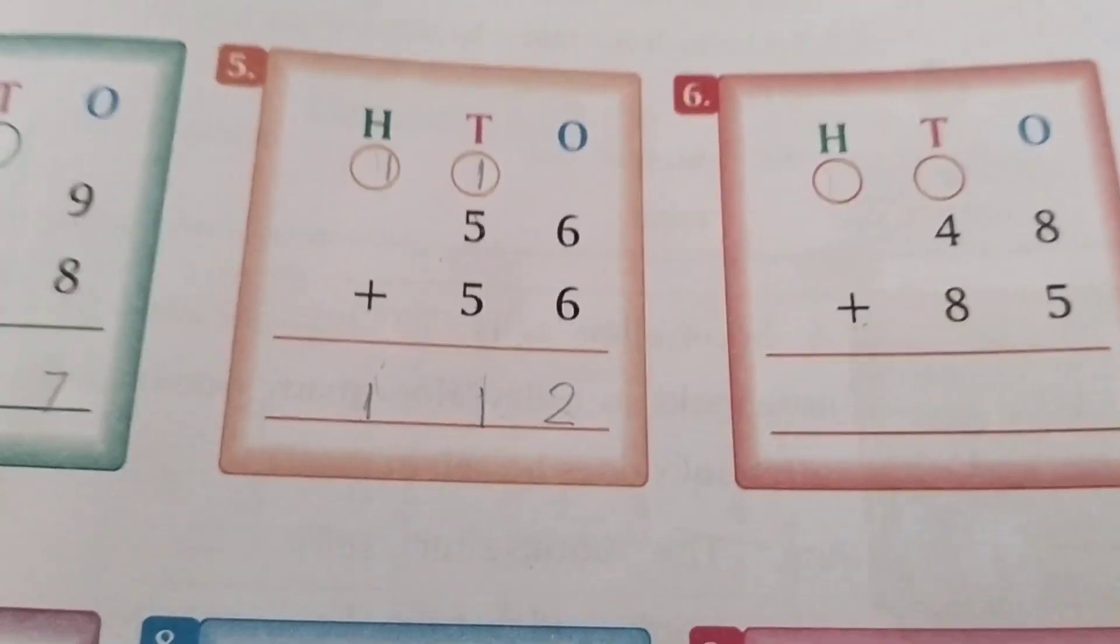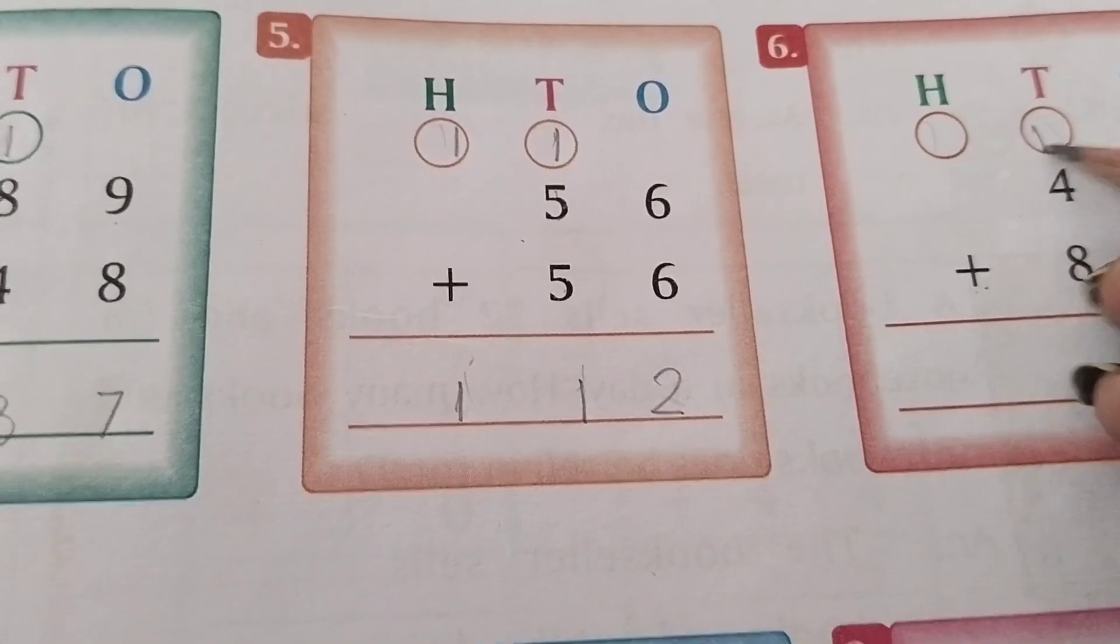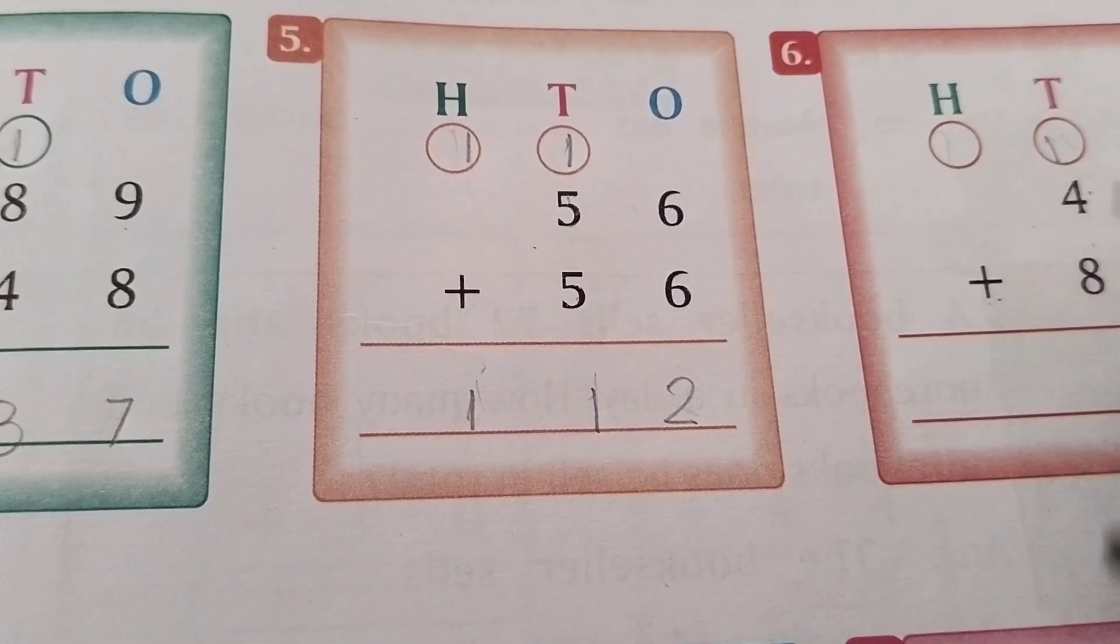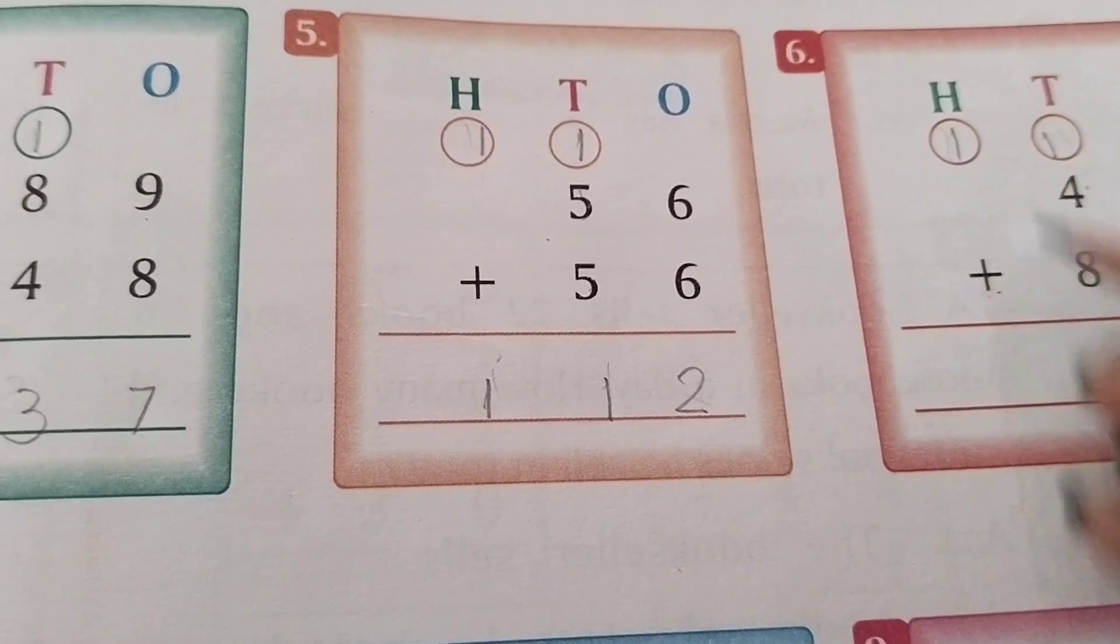Next we have 8 plus 5, which is 13. We write 3 and carry 1. Then 8 plus 4 equals 12, plus 1 equals 13. We write 3 here and 1 here.